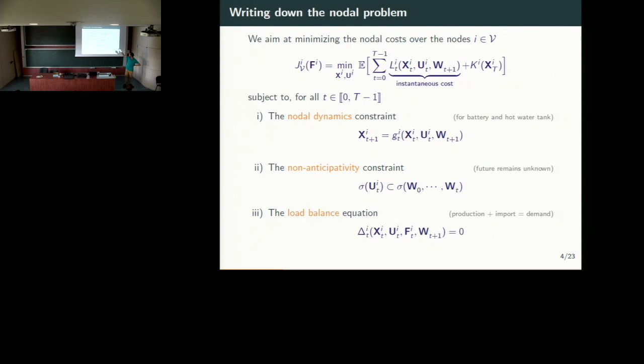That's the formulation we will adapt to model our problem. We want to minimize the operational cost, denoted by L, over our one-day horizon — that is, we want to decrease the expected value of the cost. Operational cost plus a final cost to penalize the final position of our devices. At each node we will consider stocks — we can have a battery or a hot water tank — that have a time coupling across different time steps, denoted by G.